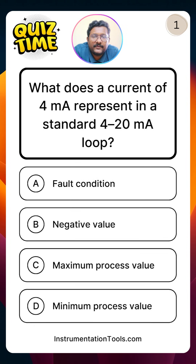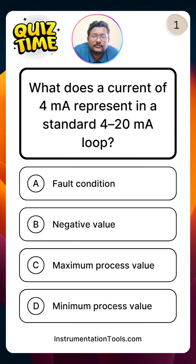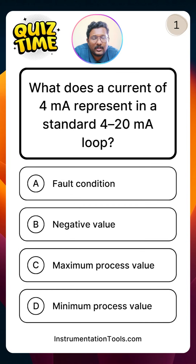Hello everyone, we have a quiz. The first question is: what does a current of 4 milliampere represent in a standard 4 to 20 milliamp loop? The 4 to 20 milliamp signal usually represents a process variable. The 4 milliampere represents 0% of process variable — that means zero scale — and 20 milliampere represents full scale, the full span of the measurement. The 4 milliampere represents the minimum process value, that means zero percentage of the process variable or zero scale.